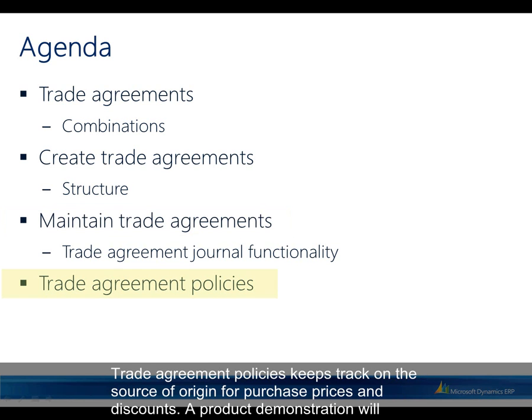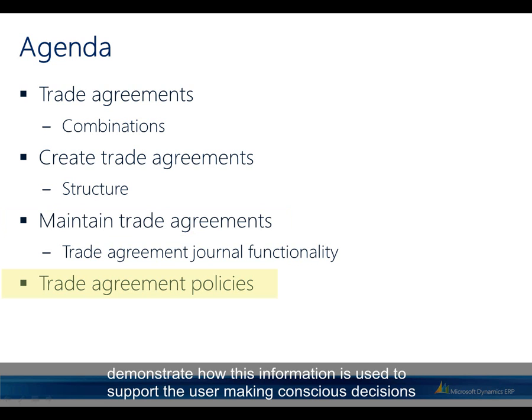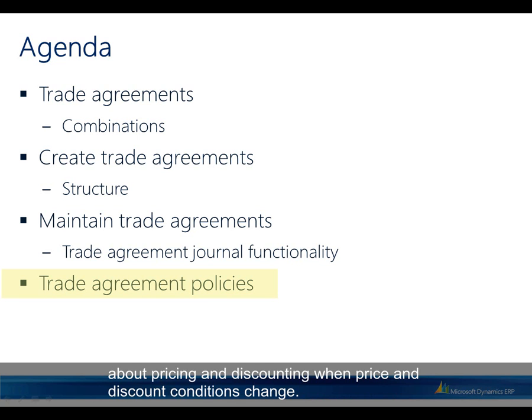Trade agreement policies keep track of the source of origin for purchase prices and discounts. A product demonstration will show how this information is used to support the user making conscious decisions about pricing and discounting when price and discount conditions change.